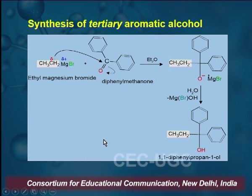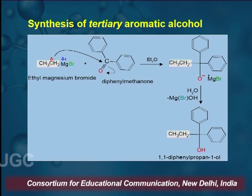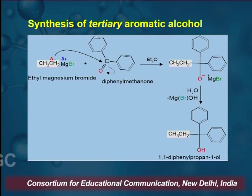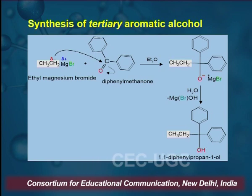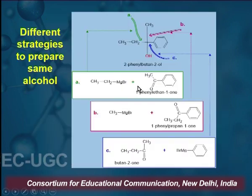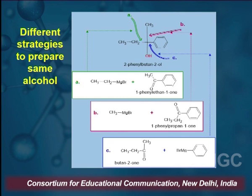Next is synthesis of tertiary aromatic alcohol. In this case, Grignard Reagent is reacted with benzophenone. In the case of benzophenone, it results in the formation of Grignard Reagent intermediate, which on hydrolysis results in the formation of tertiary aromatic alcohol — where one part comes from benzophenone's alkyl and the other two are aromatic benzene rings. Different strategies can be planned for any desirable product.